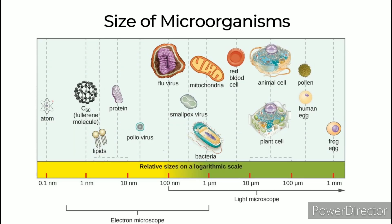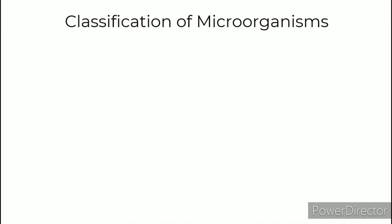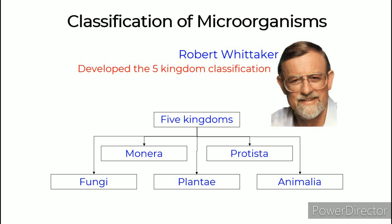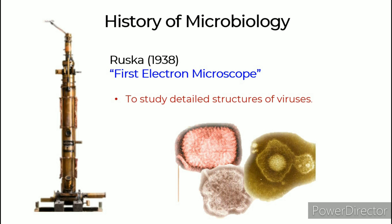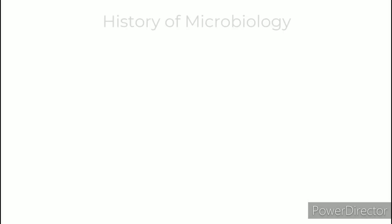Here in this image you can see the sizes of microorganisms. Robert Whittaker developed the five kingdom classification: Monera, Protista, Fungi, Plantae, and Animalia. The electron microscope is capable of magnifying biological specimens up to 1 million times. These computer-enhanced images of smallpox, herpes simplex, and mumps are magnified respectively 150,000 and 90,000 times. Its use was to study detailed structures of viruses.